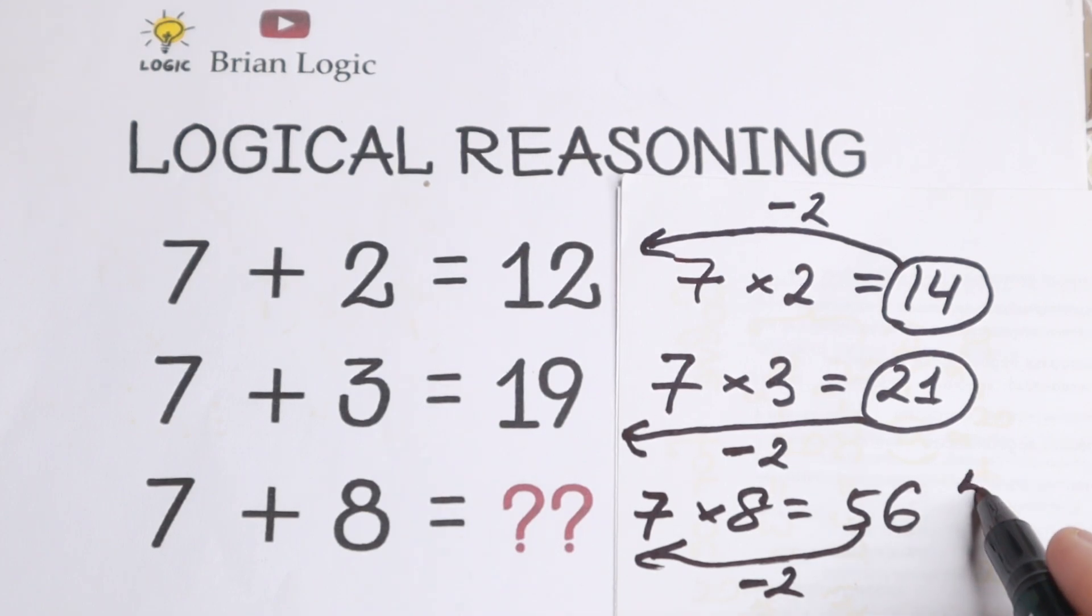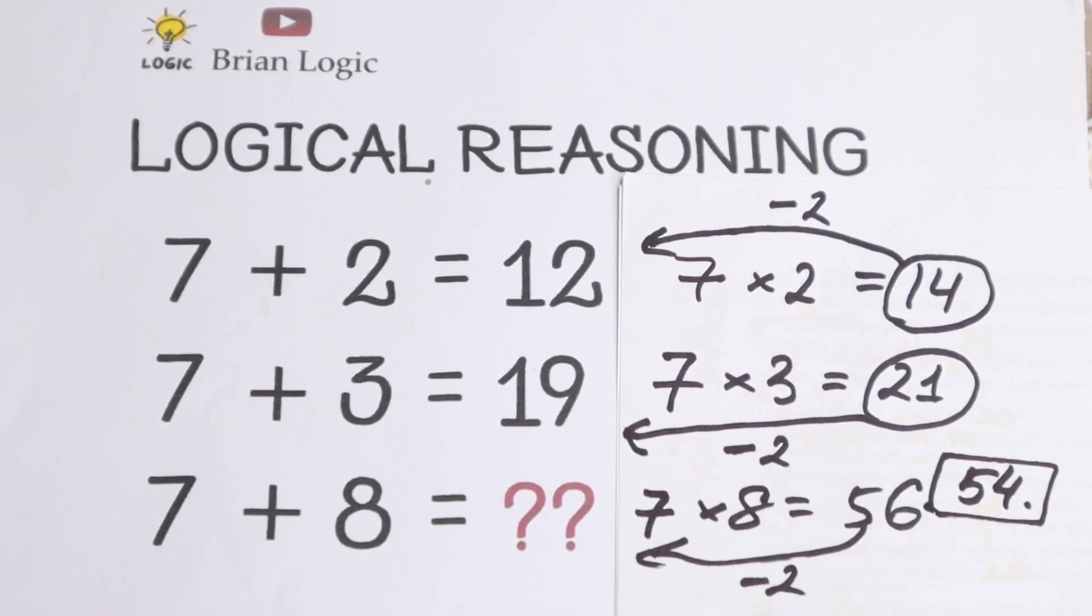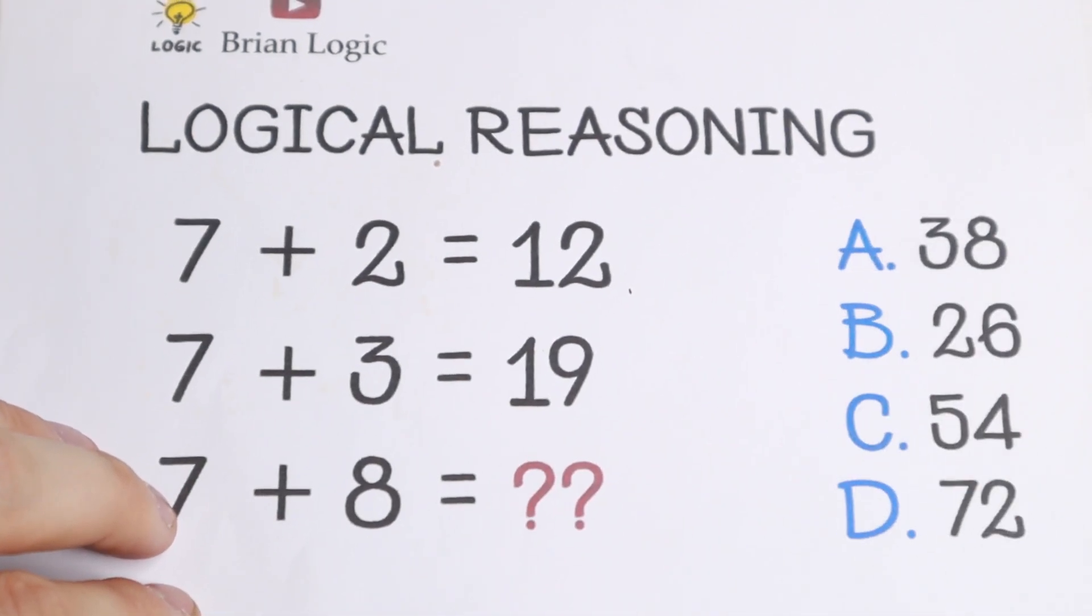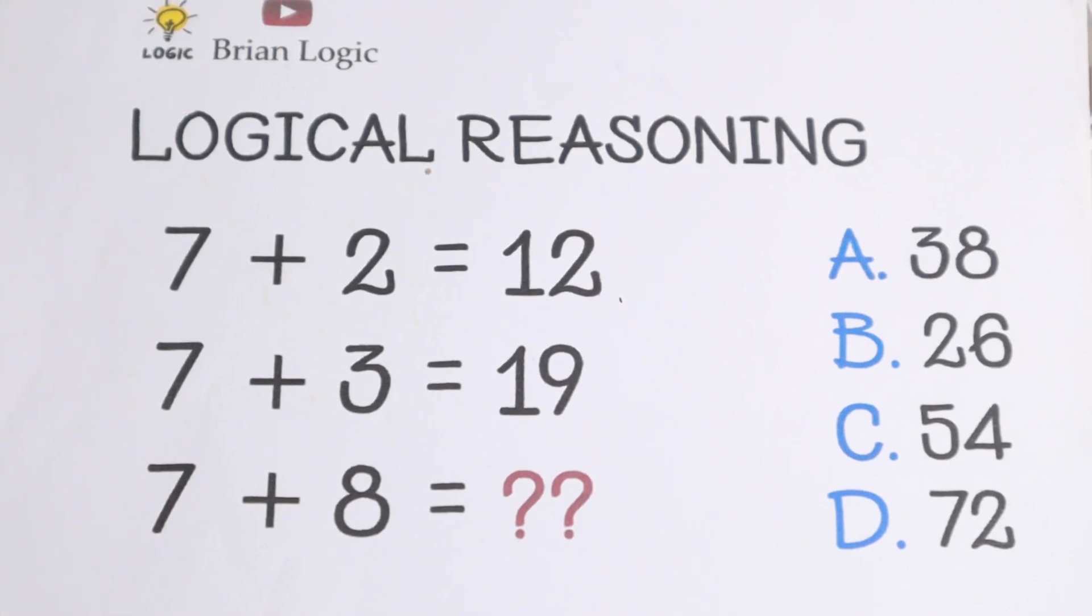So our answer is 54. But let's look to the options. Maybe we'll find this option, maybe we don't find this option. Let's look to the options. So we have this option, option C. So as you can see, this is my approach to this problem.